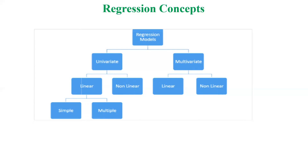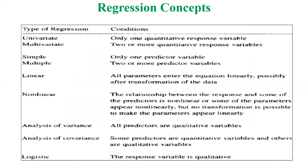Looking at the detailed classification: univariate regression has only one quantitative response variable. Multivariate regression has two or more quantitative response variables. Simple regression uses only one predictor variable, while multiple regression uses two or more predictor variables. Linear models specify that all parameters enter the equation linearly, possibly after transformation of the data.